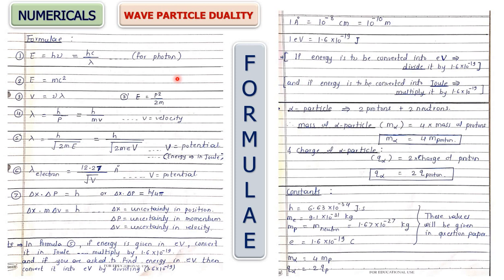First, let us understand all the formulas listed here one by one. The first formula is E = hν. If you are asked to find out the energy of a photon — note it is photon, not proton — then you use this formula E = hν, where ν is frequency, so it is also hc/λ.